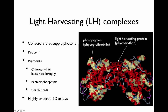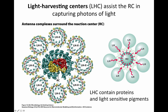These are highly ordered 2D arrays. Here is the light harvesting center arranged in Rhodobacter sphaeroides. You have light harvesting complexes that surround another set of light harvesting complexes, and in the center is the reaction center. All the light is focused and eventually funneled in on the reaction center.